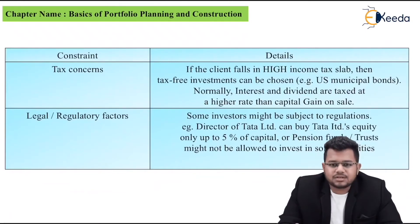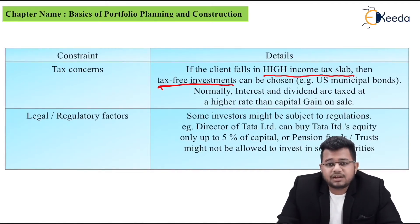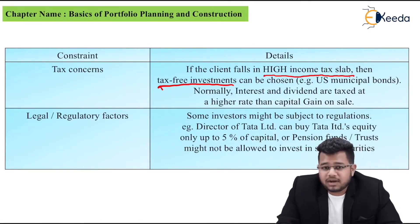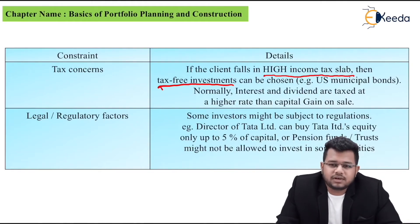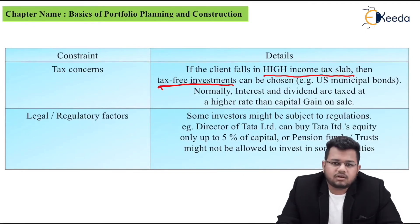The third constraint is tax concerns. If the client falls in a high income tax slab, then tax-free investments can be chosen, like US municipal bonds. Normally, interest and dividends are taxed at a higher rate than capital gains on sale. So if you don't want high income from interest or dividends, go for stocks which don't pay dividends and focus on growth, where capital appreciation is prioritized. Growth stocks don't pay much dividend but show capital appreciation, while value stocks pay dividends but don't appreciate as much in price. Depending on your tax slab or your country's tax laws, you can decide which type of investment suits you.